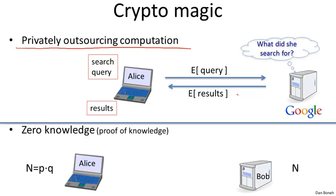The other magical application is zero knowledge — specifically, the zero knowledge proof of knowledge. There's a number n which Alice knows, constructed as the product of two large primes p and q, each about a thousand digits. Multiplying two thousand-digit numbers is fairly easy, but if you're given only their product, figuring out the factorization into primes is actually quite difficult. Alice has both n and its factorization, while Bob only has n and doesn't know the factorization.